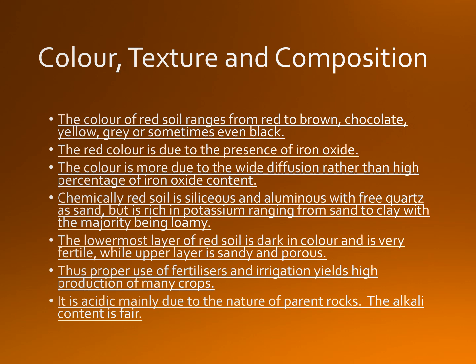Chemically, red soil is siliceous and aluminous with free quartz as sand, but is rich in potassium. Texture ranges from sand to clay with the majority being loamy. The lowermost layer of red soil is dark in color and very fertile, while the upper layer is sandy and porous. Thus, proper use of fertilizers and irrigation yields high production of many crops. It is acidic mainly due to the nature of parent rock. The alkali content is fair. It is poor in lime, magnesia, phosphates, nitrogen, and humus but fairly rich in potassium.